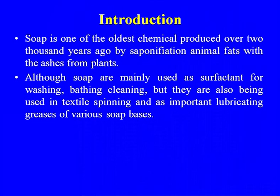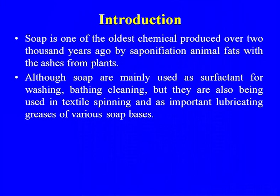Soap is one of the oldest chemicals, produced over 2000 years ago by saponification of animal fat with ashes from plants. Although soaps are mainly used as surfactants for washing, bathing, and cleaning, they are also used in textile spinning and as important bases for lubricating greases — an emulsion where one part is soap and the other is the lubricating oil. Different grades of soap are used in lubricating, depending on the requirement and temperature, including multipurpose, sodium-based, lithium-based, and graphite-based greases.